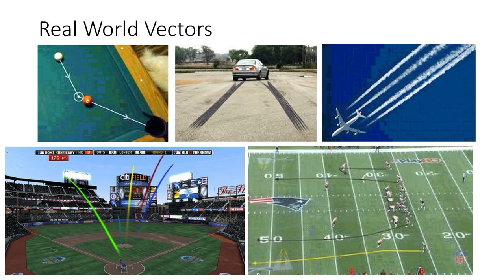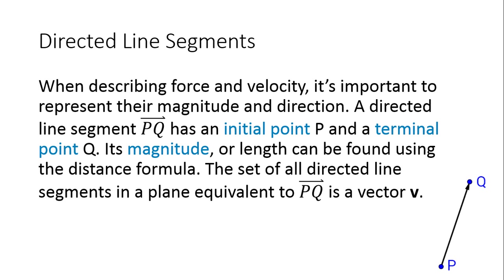What kind of force and direction do I need to shoot that pool ball at another pool ball in order to get what I'm hoping to get? Skid marks show you where a vehicle has been, and also the magnitude of when they started to peel out. Airplane vapor trails are another example. Those are ways of visualizing real-world vectors.